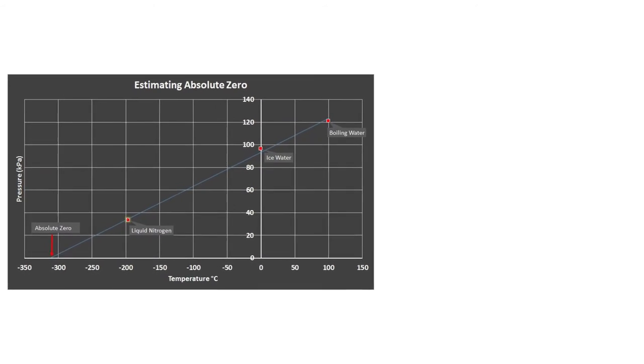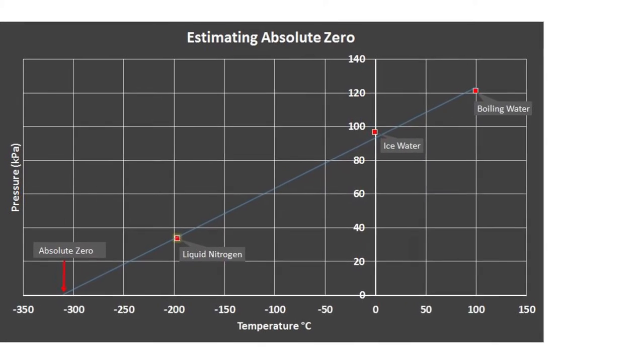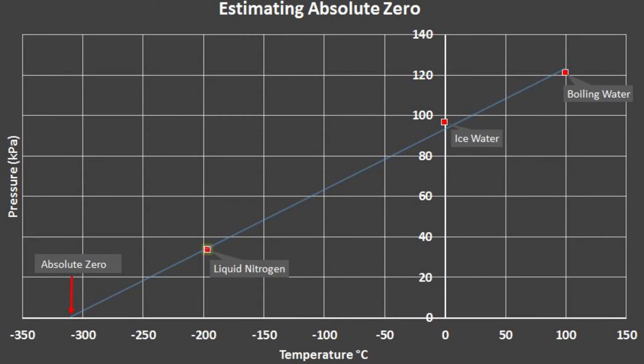If we draw a line as best we can through our three data points, we can see that it hits the x-axis where pressure would be zero at a value of approximately negative 300 degrees Celsius. This is the coldest possible temperature, absolute zero, where all atomic motion ceases.